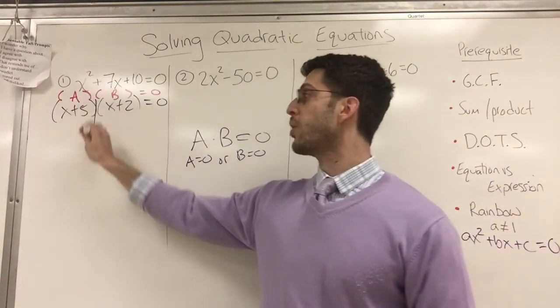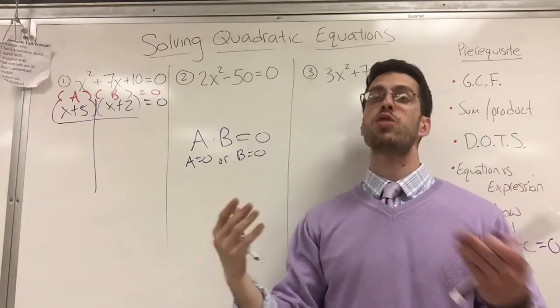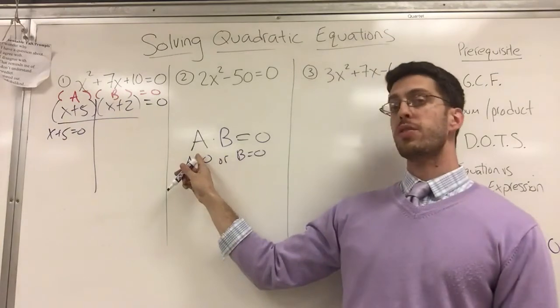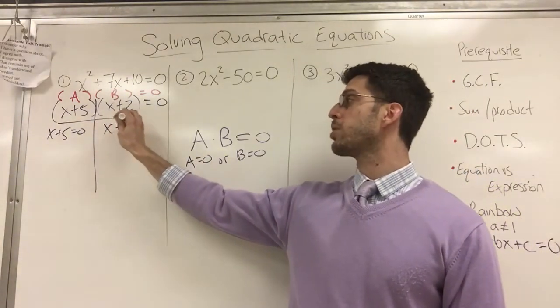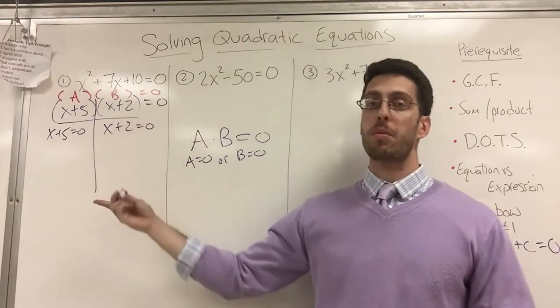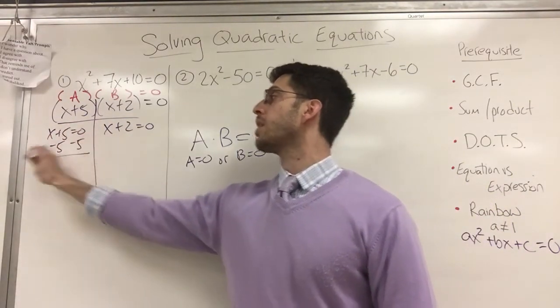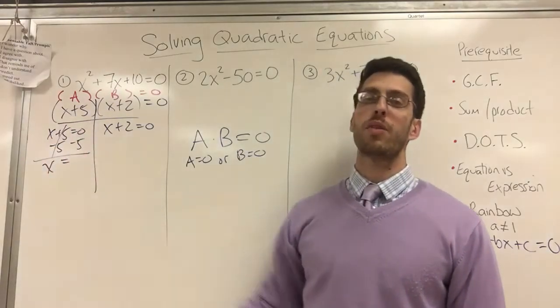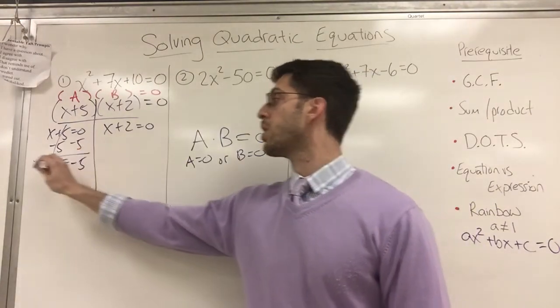So I'm going to, I call this a T chart. I just kind of split it down the middle to show you. I'm going to create two separate baby problems. Either x plus five equals zero, either the first thing equals zero or the second thing equals zero, or x plus two equals zero. I call this a baby problem because it's a one step equation. Subtract five on both sides. Five's cancel out and x is alone. And x equals zero minus five. Please don't tell me zero. It's negative five. That is one solution.